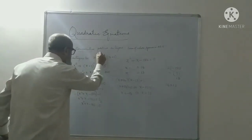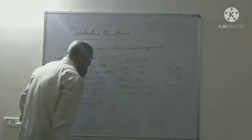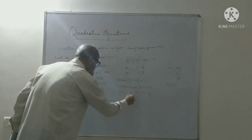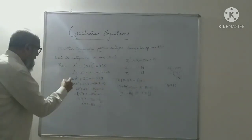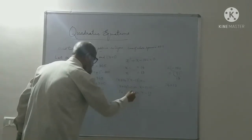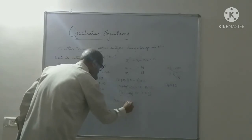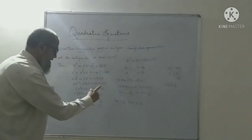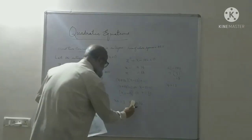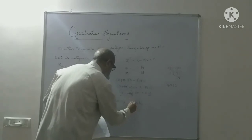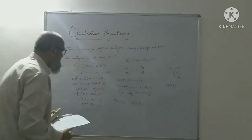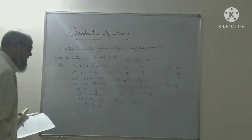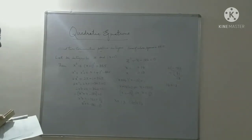The problem says positive integers, so we take only the positive root. x = −14 is not possible, so we take x = 13. One number is 13 and the consecutive number is x + 1 = 14. Therefore the two consecutive positive integers whose sum of squares is 365 are 13 and 14.